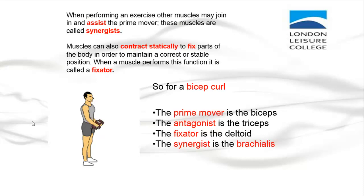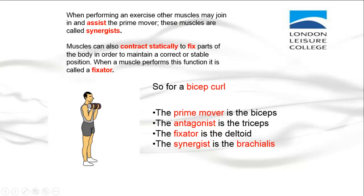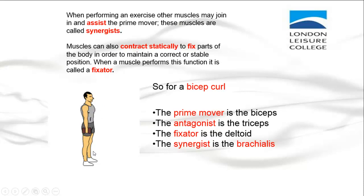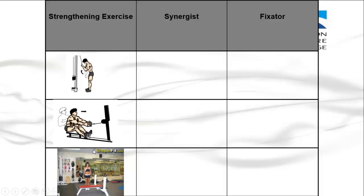For a bicep curl, the prime mover is the biceps. The antagonist — the opposite muscle — is the triceps. The fixator is the deltoid, because if the deltoid wasn't working the whole arm would come up in front of you; the deltoids work statically to keep the arm fixed in position. The synergists are the brachialis — the muscles just above the forearm — which help the biceps lift the weight.